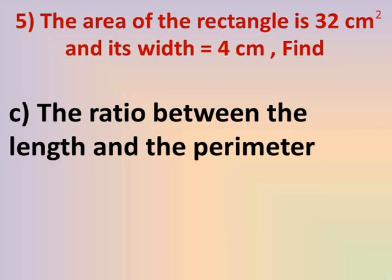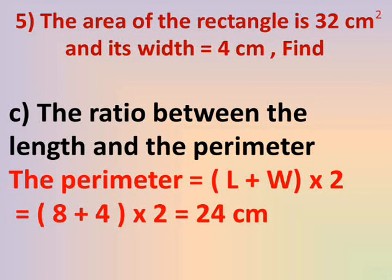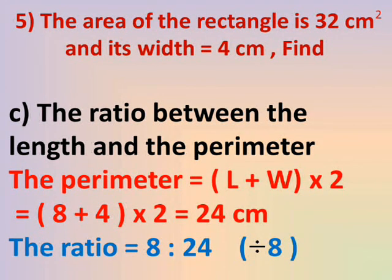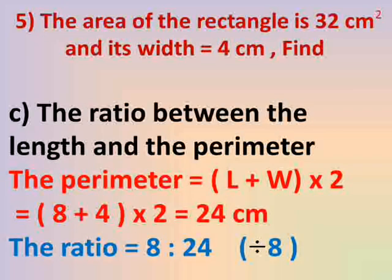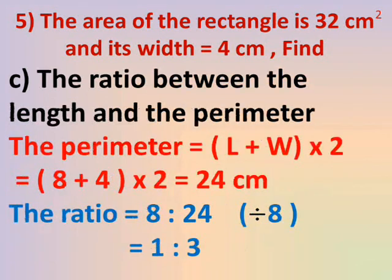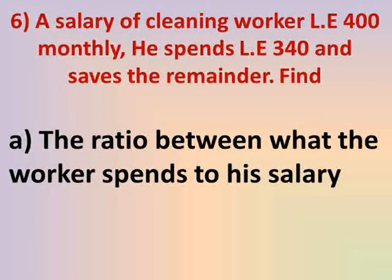Number C: The ratio between the length and the perimeter. The length is 8. The perimeter equals (length + width) × 2 = (8 + 4) × 2 = 24 cm. The ratio between the length of 8 and the perimeter of 24 is 8 to 24. Both are divisible by 8: 8 ÷ 8 = 1 and 24 ÷ 8 = 3. The ratio in simplest form is 1 to 3.